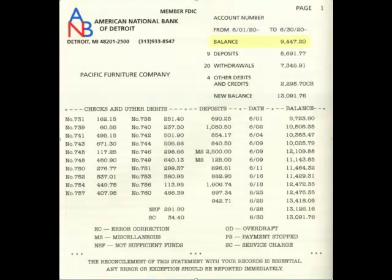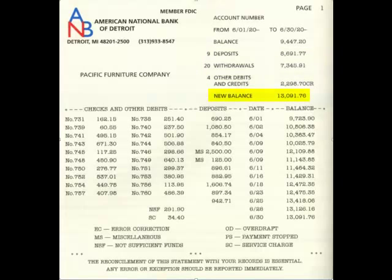The balance of $9,447 is the balance on June 1st — that's the beginning balance. Then it shows you the total of all the deposits that came in, the withdrawals that went out, the other debits and credits, and then it comes up to the new balance of $13,000 and change. That is the ending balance on June 30th.